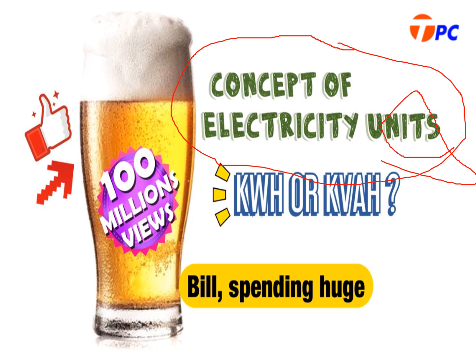In units, there are two terms: kilowatt hour and kVAH. This is very important because without understanding these two units — kilowatt hour and kVAH — you will not be able to understand the entire concept. So we'll be talking about these two units as well.